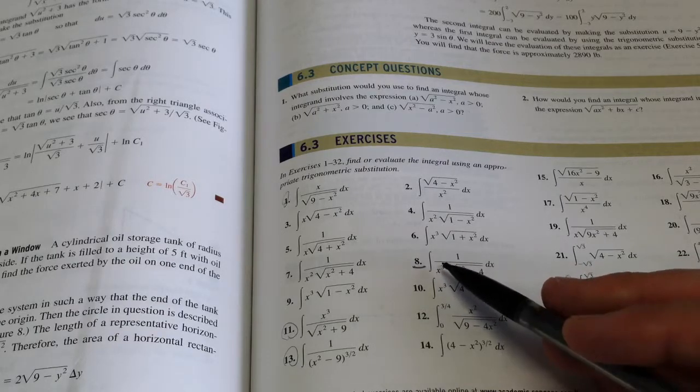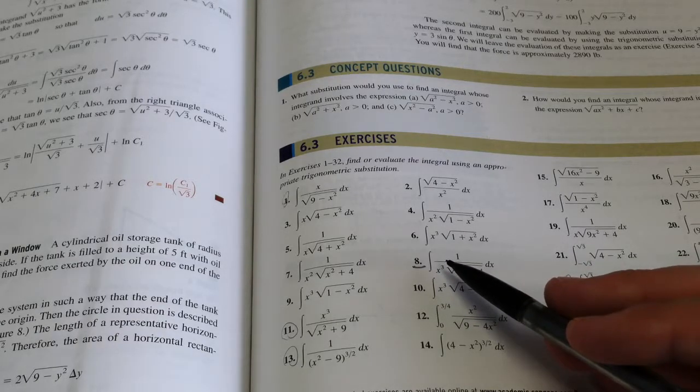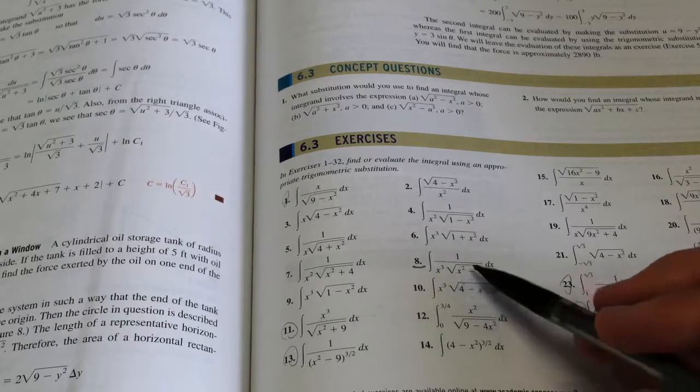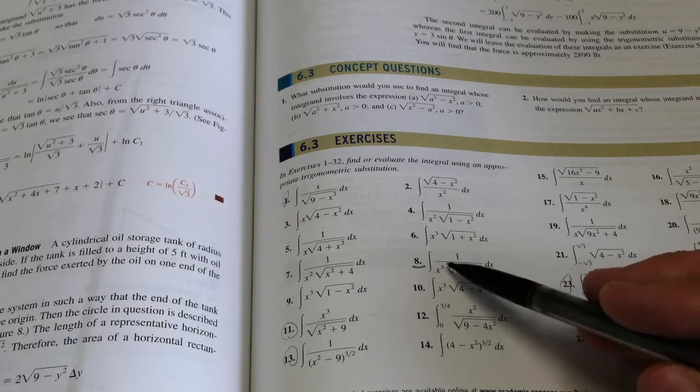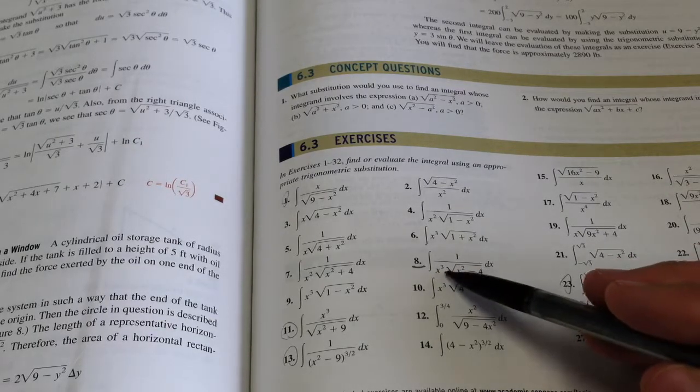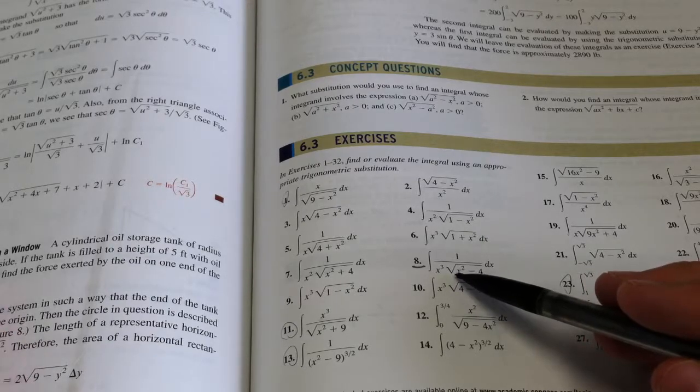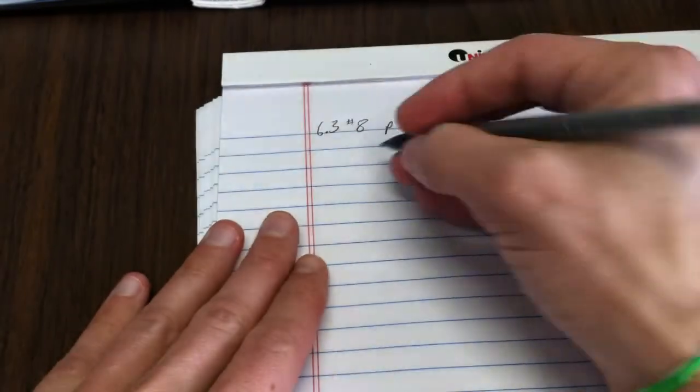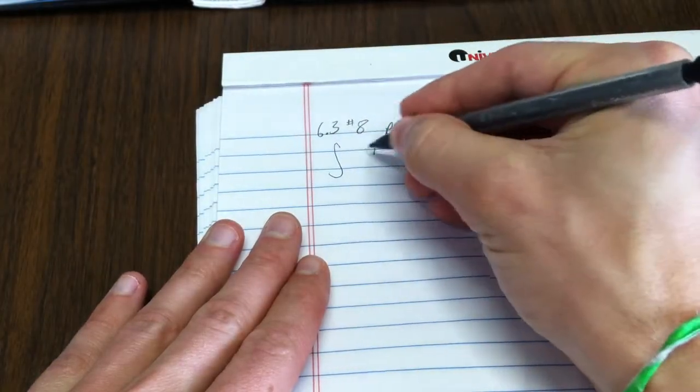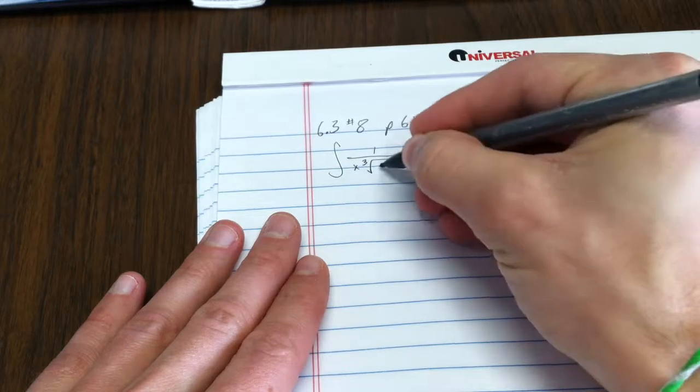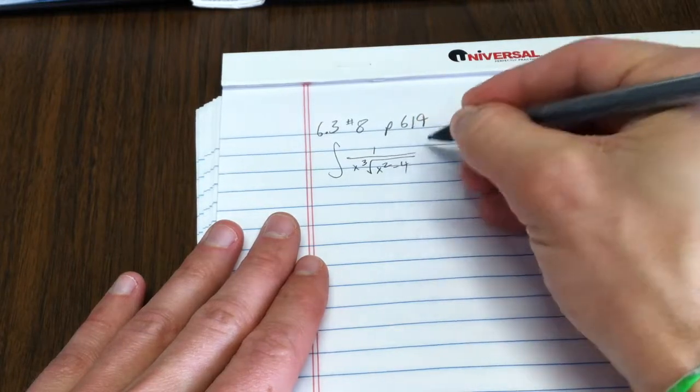It asks us to find or evaluate the integral using an appropriate trig substitution. And what we have is 1 over x cubed times the square root of x squared minus 4 dx. So let's go ahead and write that problem out. 1 over x cubed times the square root of x squared minus 4 dx.